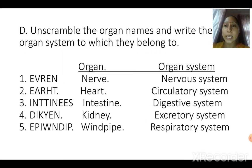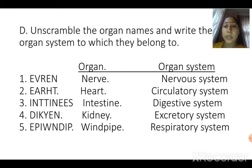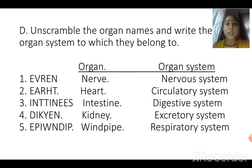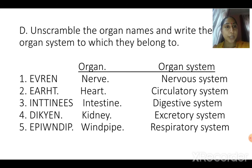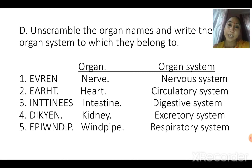One more exercise remaining — Exercise D: unscramble the organ names and write the organ system to which they belong. The first answer is nerve, and nerve is a part of the nervous system. The second is heart, and heart is a part of the circulatory system. Third is intestine — part of the digestive system, whether small or large intestine. Fourth is kidney — part of the excretory system. Fifth is windpipe — part of the respiratory system.